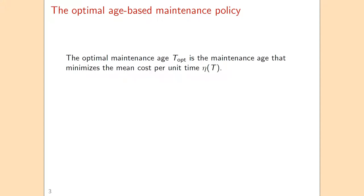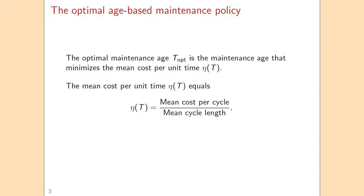The optimal maintenance age will be denoted by T-Opt, and that's the maintenance age that minimizes the mean cost per unit of time. The mean cost per unit of time is denoted by eta as a function of T, and that's the thing that we are going to minimize.